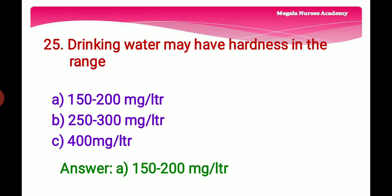Twenty-fifth question: Drinking water may have hardness in the range — Option A: 150 to 200 mg per liter, Option B: 250 to 300 mg per liter, Option C: 400 mg per liter. The right answer is Option A, 150 to 200 mg per liter.